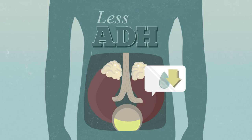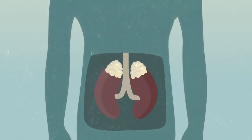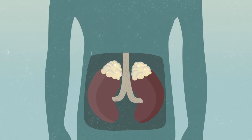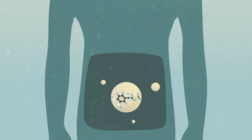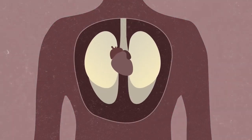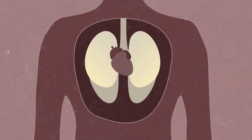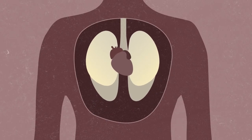Less ADH means your kidneys will absorb less water, causing urine to become less concentrated and output is increased. Ever felt suddenly frightened? When threatened, the brain activates neurons that stimulate the adrenal gland, located right above your kidneys, to rapidly secrete adrenaline. Adrenaline then acts on your heart and lungs to increase heart rate and breathing rate.